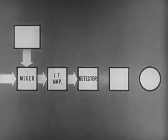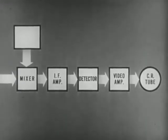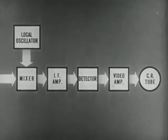This receiver uses the superheterodyne principle. By mixing the incoming signal with a local signal in a crystal or tube mixer, an intermediate frequency is produced. The intermediate frequency component, which is separated in the detector, is amplified in the video amplifier and displayed on the cathode ray tube. The generation of the local signal is the function of the local oscillator.